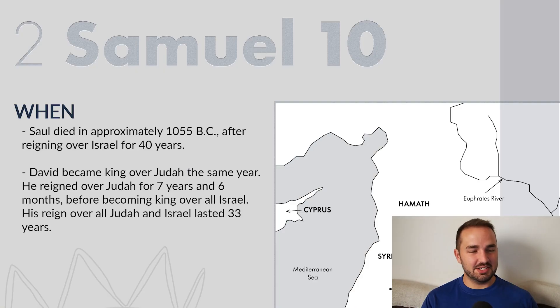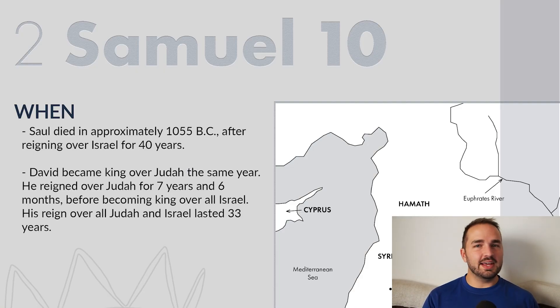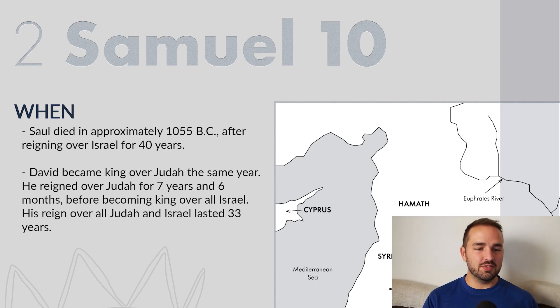Hello everybody, and welcome back to the To Be Like Christ five-minute Bible study series. Today we are talking about 2 Samuel chapter 10 in five minutes. There's a free PDF handout — there's a link down in the description if you want it.